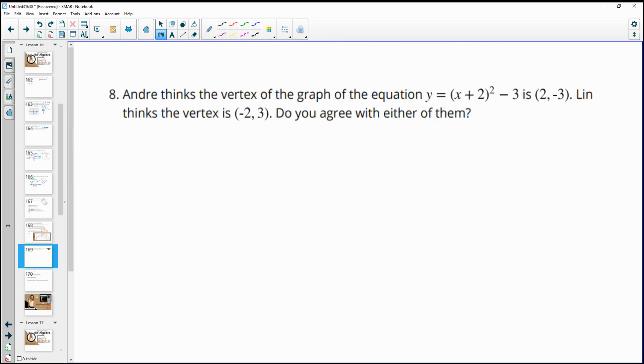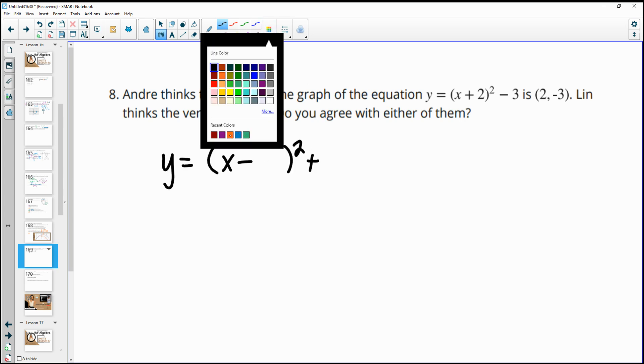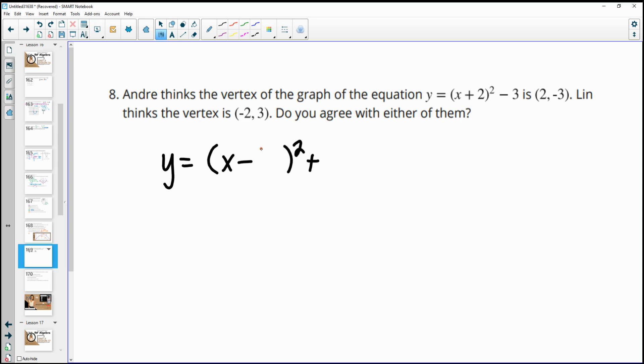Number eight, Andre thinks the vertex of the graph of this equation, x plus 2 squared minus 3 is (2, -3), and Lynn thinks the vertex is (-2, 3). Do you agree with either of them? So remember, vertex form will look like this, and your x-coordinate of your vertex is h, and your y-coordinate of your vertex is k. OK, so our vertex is (h, k).